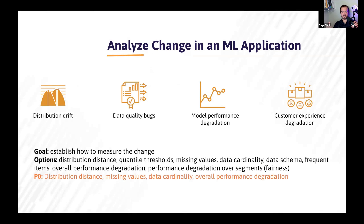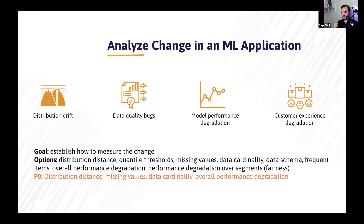Now that you know the type of change you want to look for, you should establish how you want to measure it. This could be distribution distance — if it changes a certain amount, flag it or kick off an automated job in your MLOps pipeline. With LLMs, this could be things like monitoring for jailbreak similarity — are people trying to get your model to behave in ways it shouldn't? Or monitoring sentiment — is the response incredibly negative? These are all different metrics you can choose to monitor for LLMs, depending on your use case.